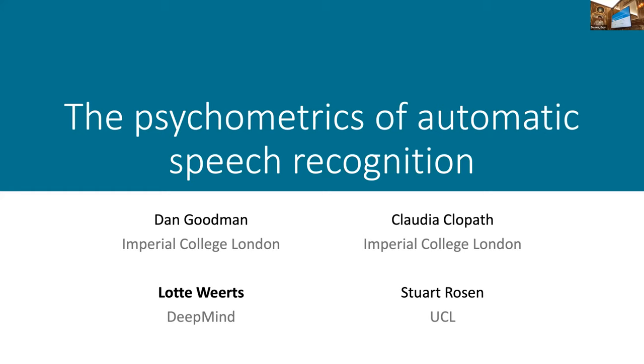The title is Psychometric Automatic Speech Recognition, and the question is essentially, do modern deep neural network based models of speech recognition provide a good model of the human auditory system? Why would you even ask that question? And is the answer yes or no? That's basically what I'm going to try to get at with this talk.